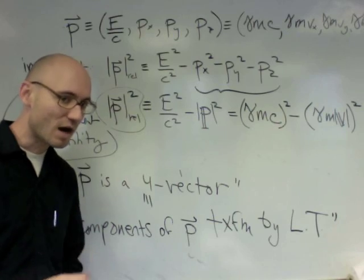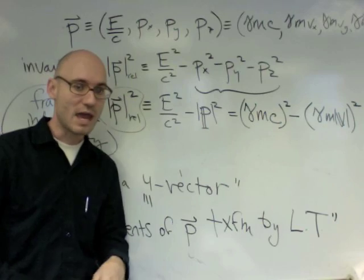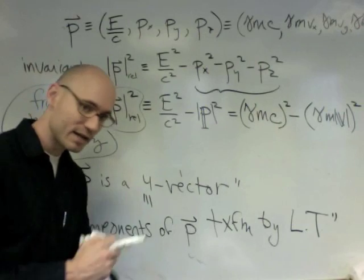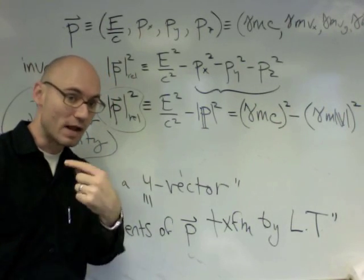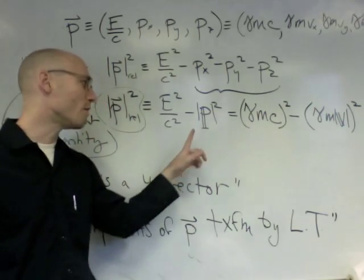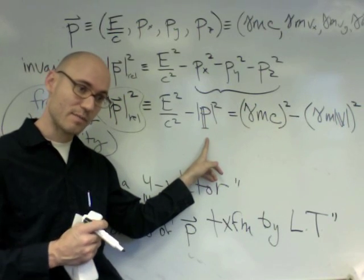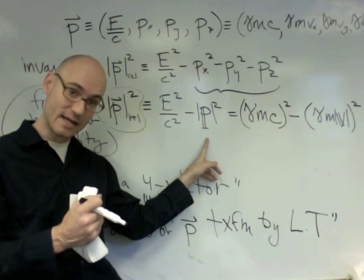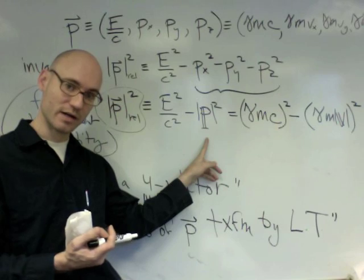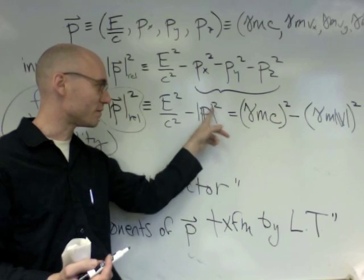Because remember, momentum is not frame-independent. Three momentum is not frame-independent. After all, if you have a bullet flying through the room, it has a lot of momentum. But if you're running through the room as fast as the bullet, relative to you, it has no momentum. So the momentum is something, the three momentum that we're used to using, in fact, is a frame-dependent quantity. Even its magnitude is a frame-dependent quantity. It's zero in some frames. It's large in other frames. So this is not a frame-independent quantity.